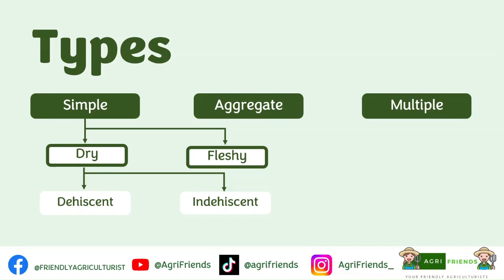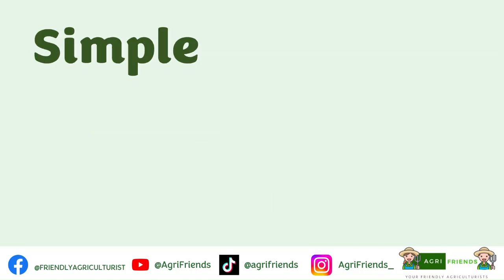Simple fruits are fruits that are formed from one matured pistil of a single flower — a one-to-one ratio: single pistil from one flower. They can either be true or an accessory fruit. A pistil can have a single or multiple carpels, or they can have a single or multiple ovaries, so a simple fruit can have compartments or locules.